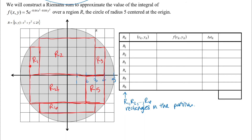I'm going to choose that first point in R1 and list it in my chart — that would be (−4, 1). For R2, I'll pick this point right here at (0, 1). For R3, I'll do one on the left side at (3, 2). For R4, I'm going to choose this one at (−2, −1). For R5, I'll pick one kind of in the middle at (3, −2). And then for R6, I'm going to pick one down in the lower right corner at (3, −4).